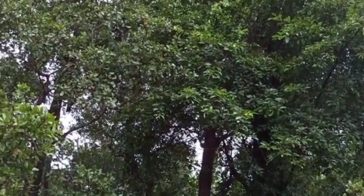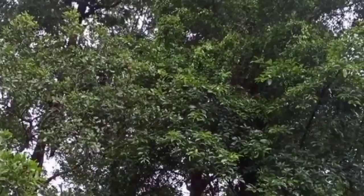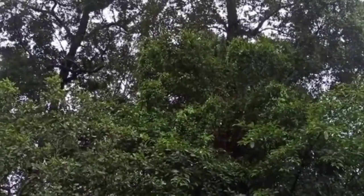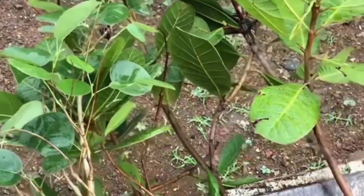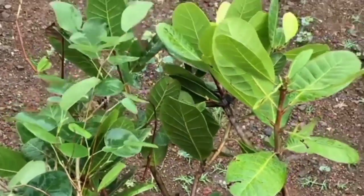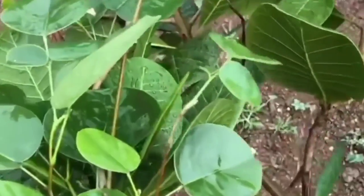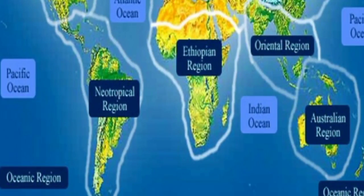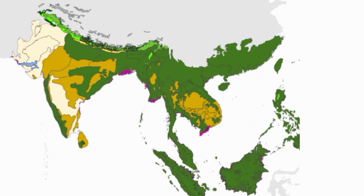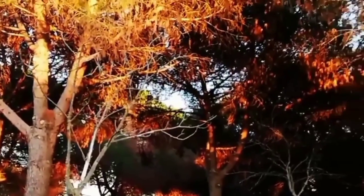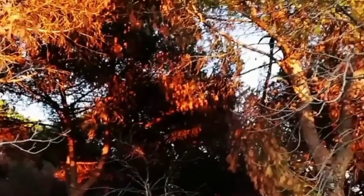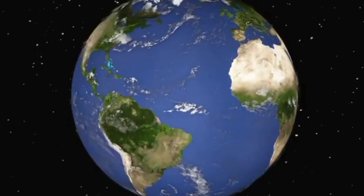Pterocarpus is a well-recognized genus of trees and woody climbers. It is distributed throughout the world in three tropical regions, viz. Neotropics, Tropical Africa, and Indo-Malaya. It consists of 35 to 40 species throughout the world.